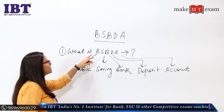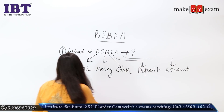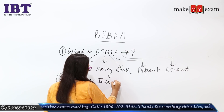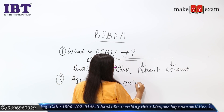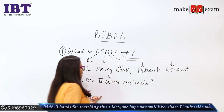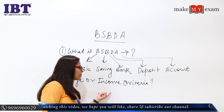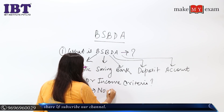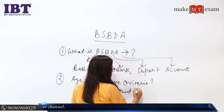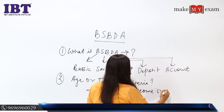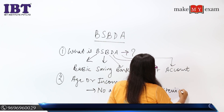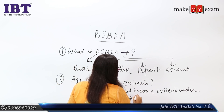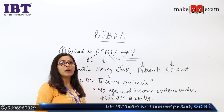The full form of this account is Basic Saving Bank Deposit Account. Regarding any age or income criteria — according to RBI guidelines, RBI has said that banks should not restrict anyone. This means there is no age and income criteria under this account, that is Basic Saving Bank Deposit Account.